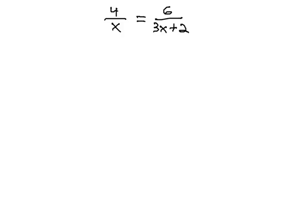In this video, we will solve proportions that have a variable in two locations. In this first example, we have 4 over x equals 6 over 3x plus 2.